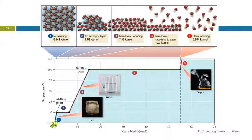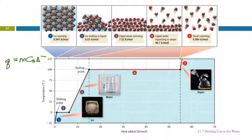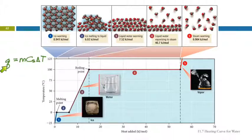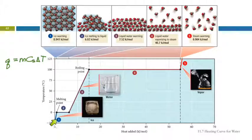We can calculate the amount of energy needed to raise the temperature of the ice using something from Chapter 6: Q equals MC delta T. The change in temperature, the specific heat capacity of the substance, and the mass of the substance — that's the amount of energy needed to change the temperature. That equation will apply to line one.